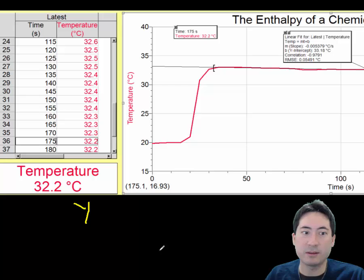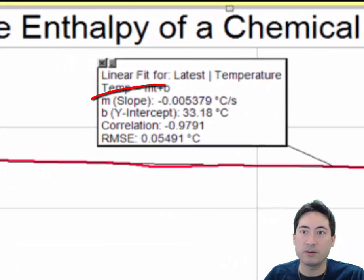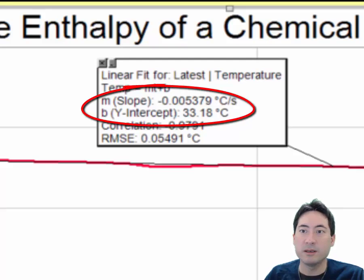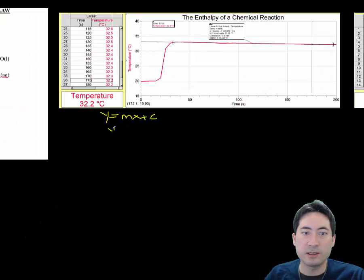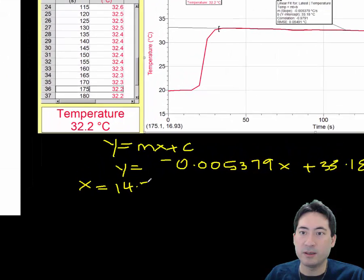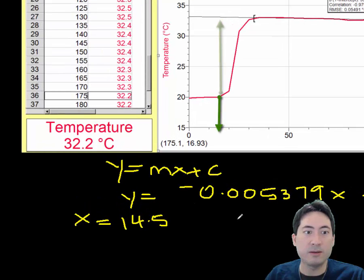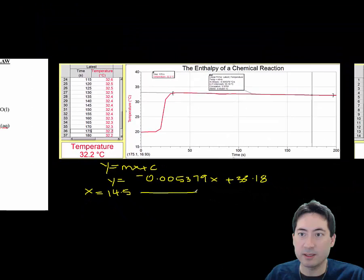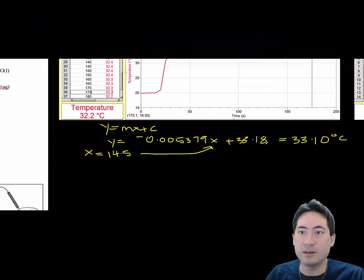These are the experimental data that I've taken from students to show you how to do the calculations. First of all, just like the previous experiment, you get the equation to the line and you substitute in the x value where you added the chemicals together, and then you're going to get your high value. Now you can minus the low value straight off the table because it's settled there before you let the reaction begin.